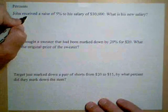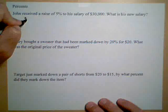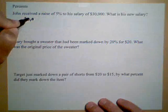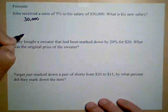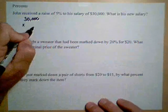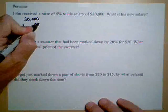So first off, we have to figure out what the amount of his raise was. To do that, we can take 30,000 and multiply it by 5%. Now 5% is a decimal, which is .05.